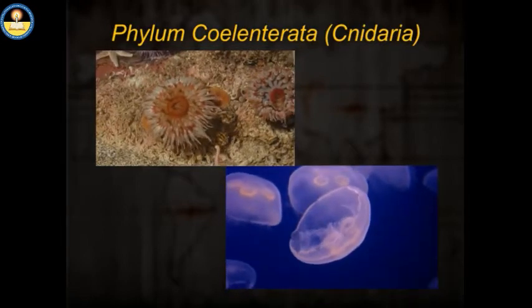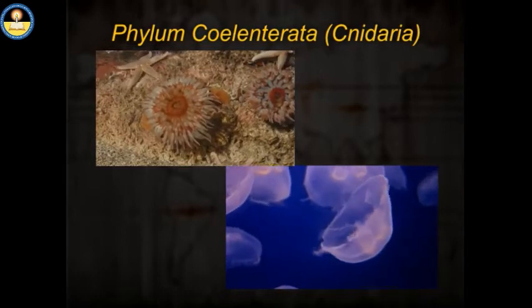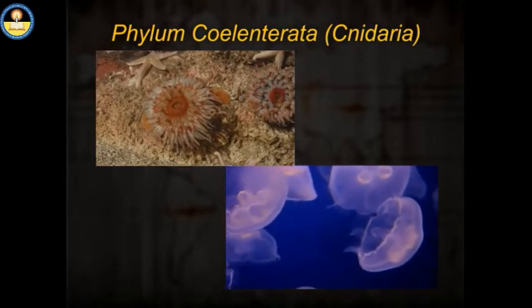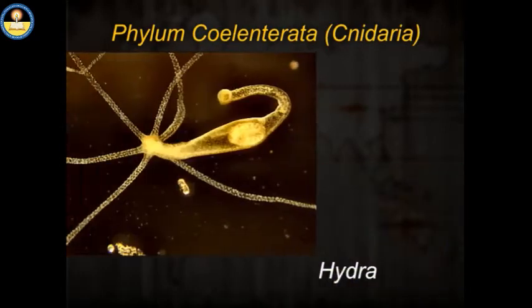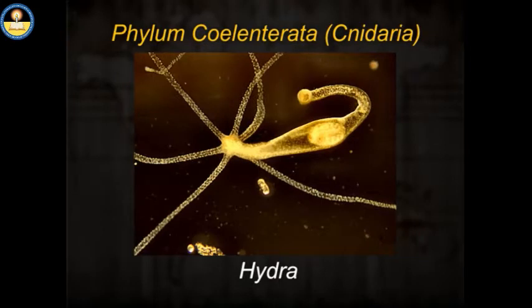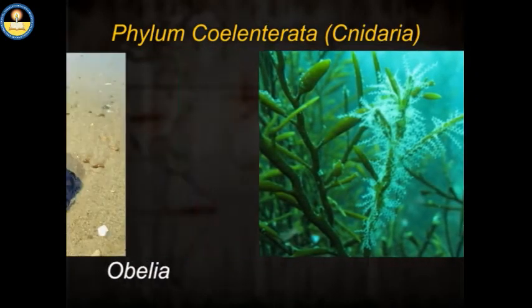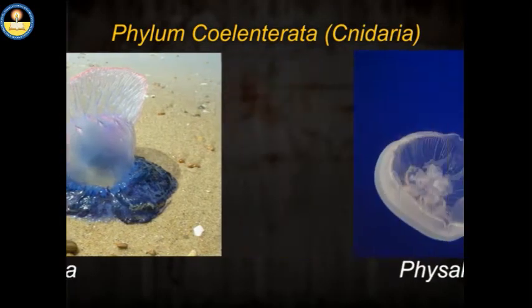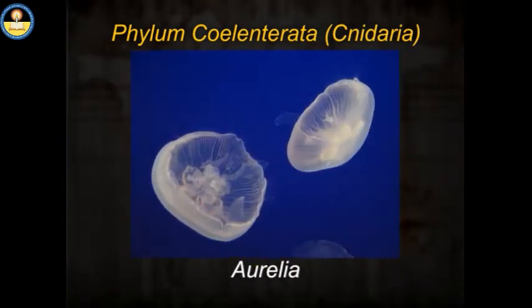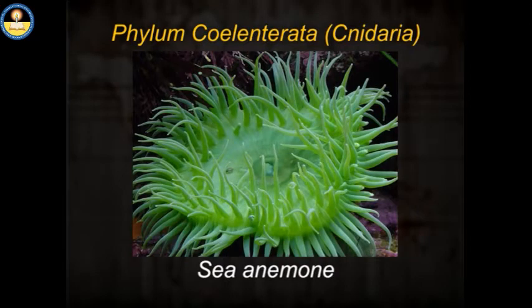Cnidaria produces corals. Some examples of Cnidarians are Hydra, Obelia, Physalia, Aurelia, and Sea Anemone.